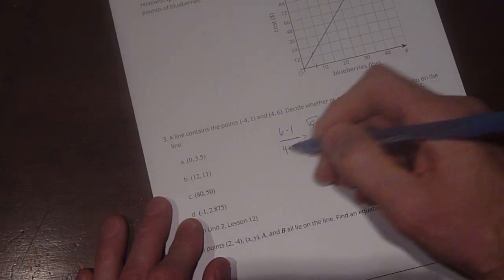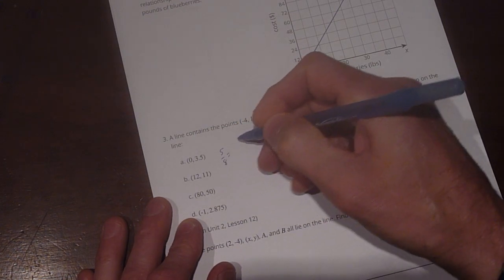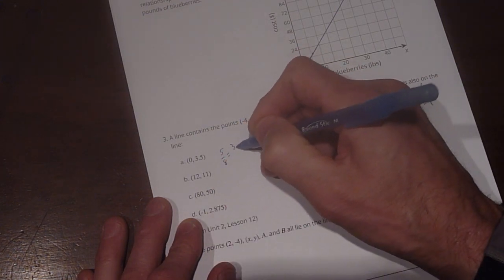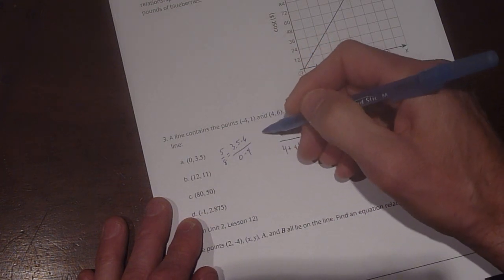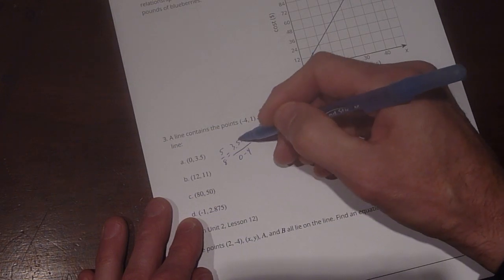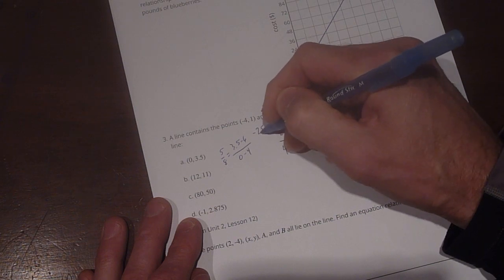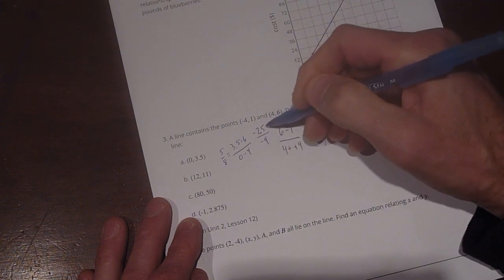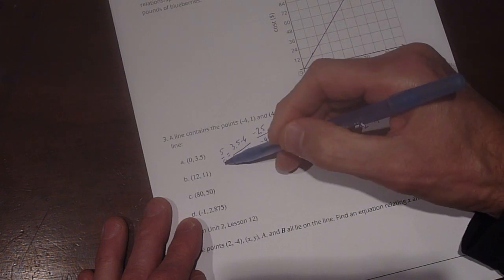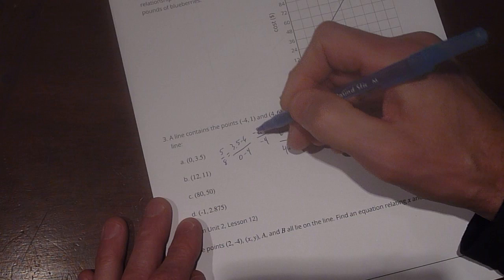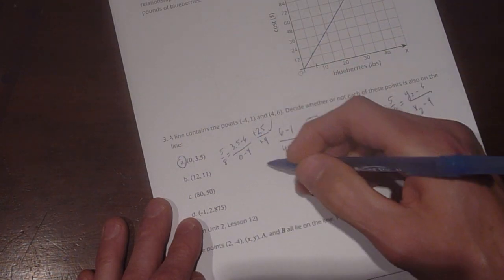So first off, we're going to say for a, is 5/8 equal to (3.5 - 6) divided by (0 - 4)? So this is going to equal 3.5 minus 6. That's going to give us a -2.5 divided by a -4. Okay, so if we double 4, it'll get us to 8. And if we double 2.5, it'll get us to 5. And both of the negatives cancel out. So that works out. So a is on that line.